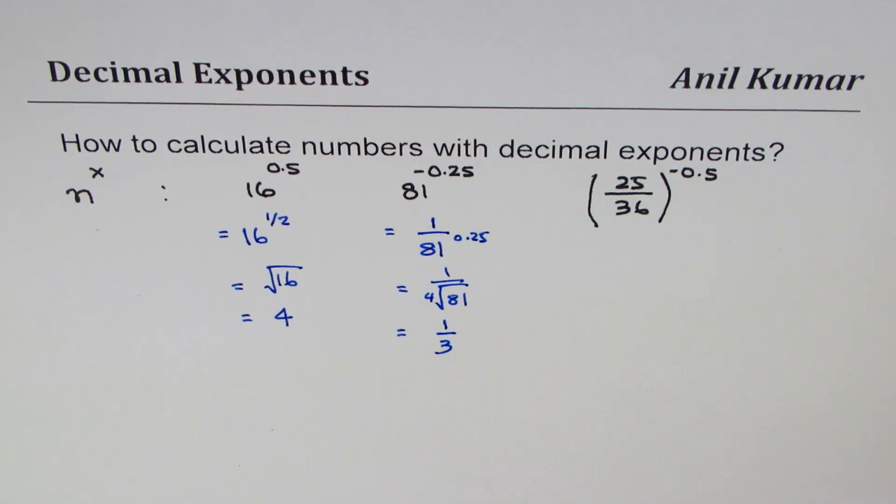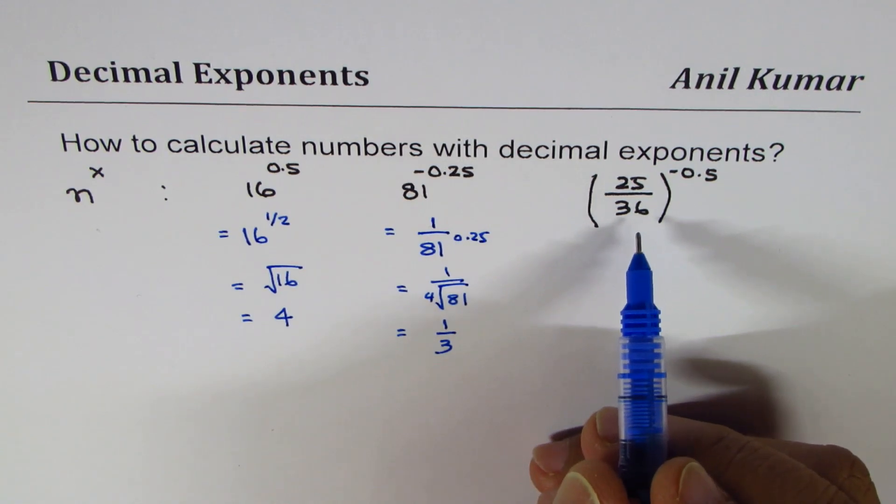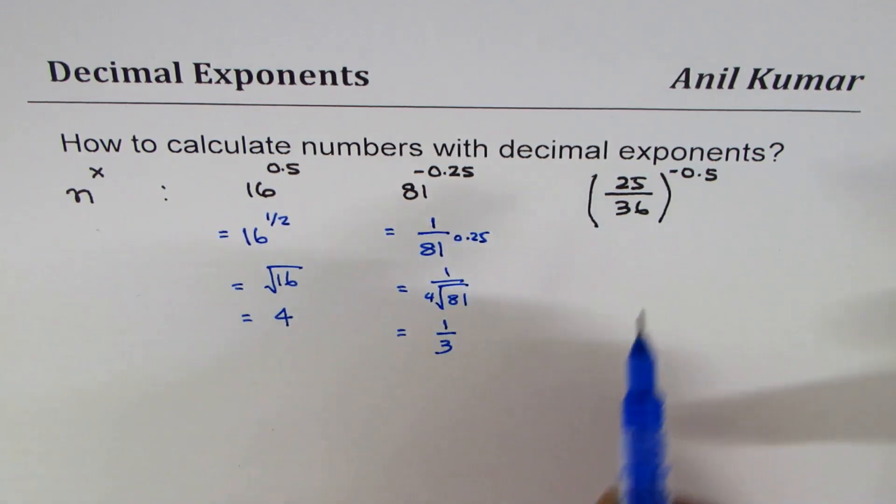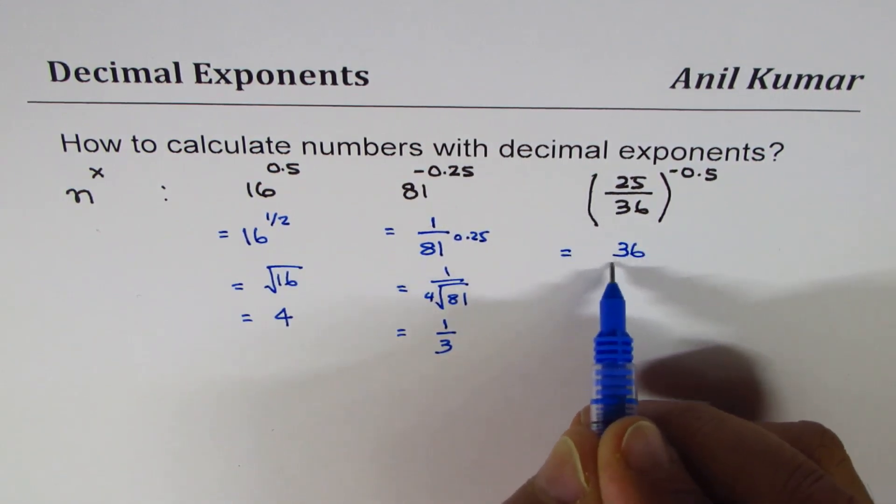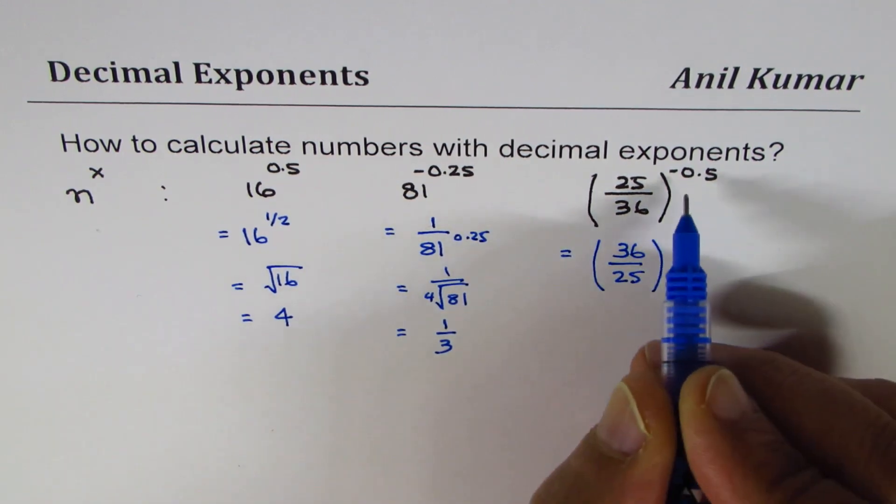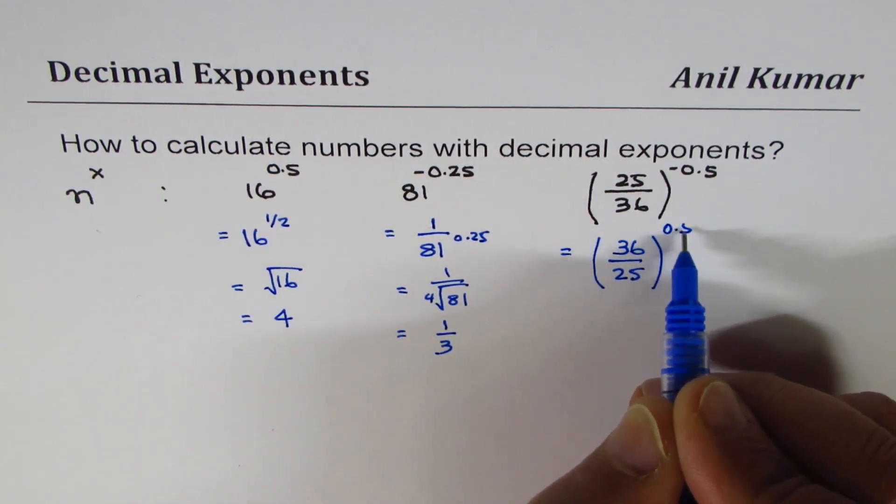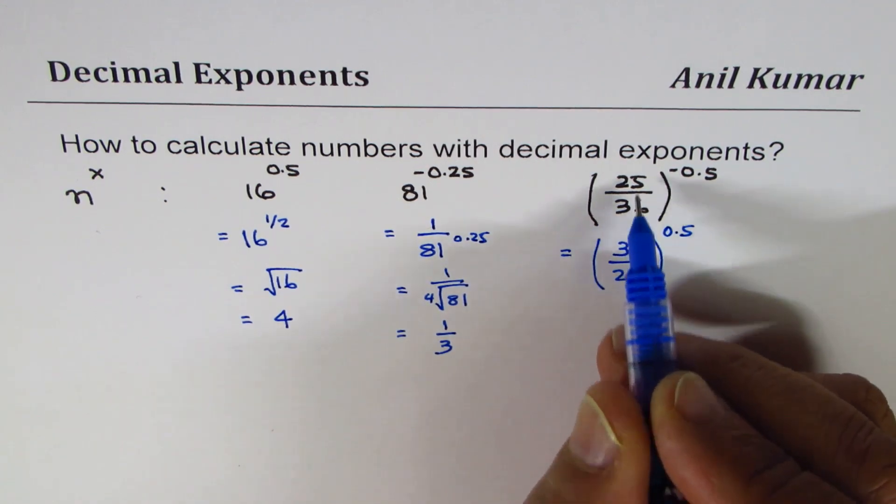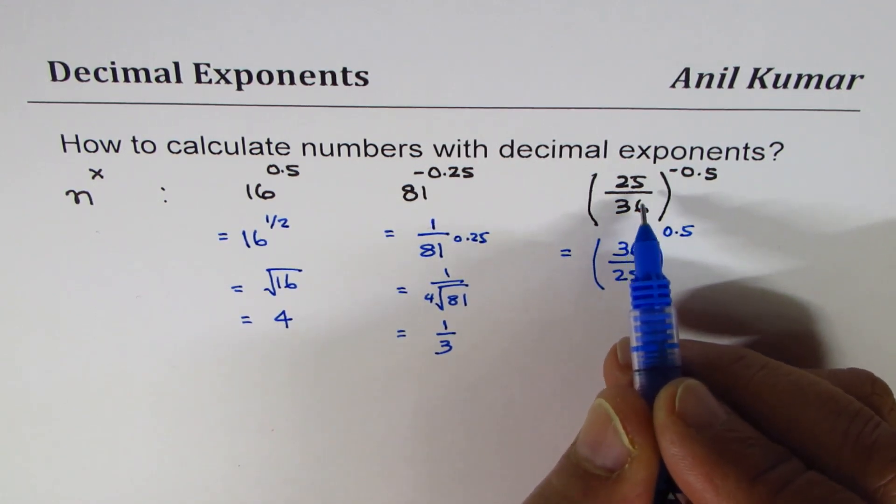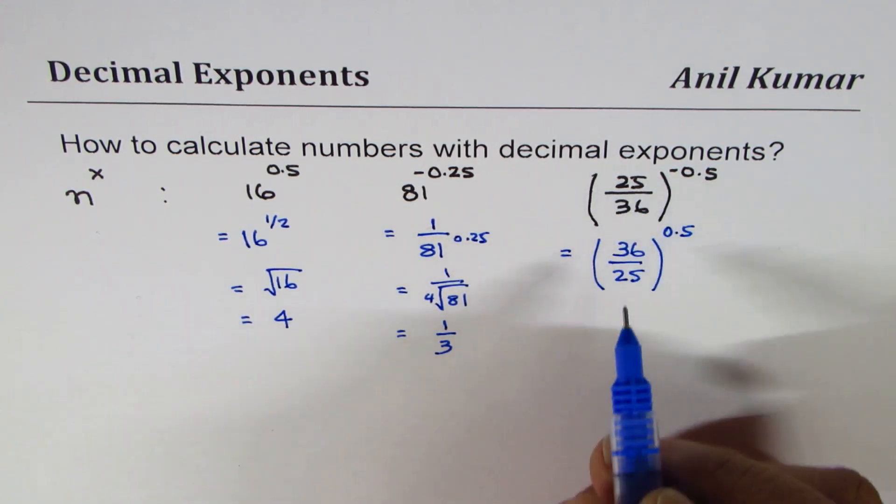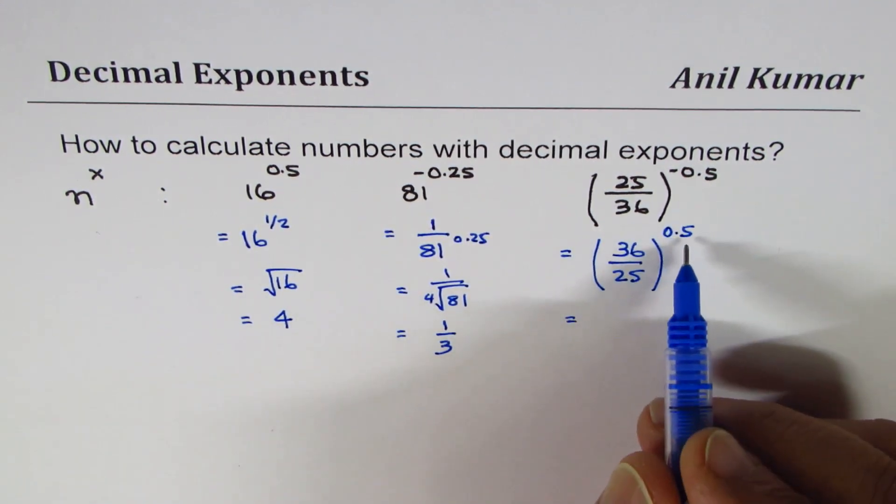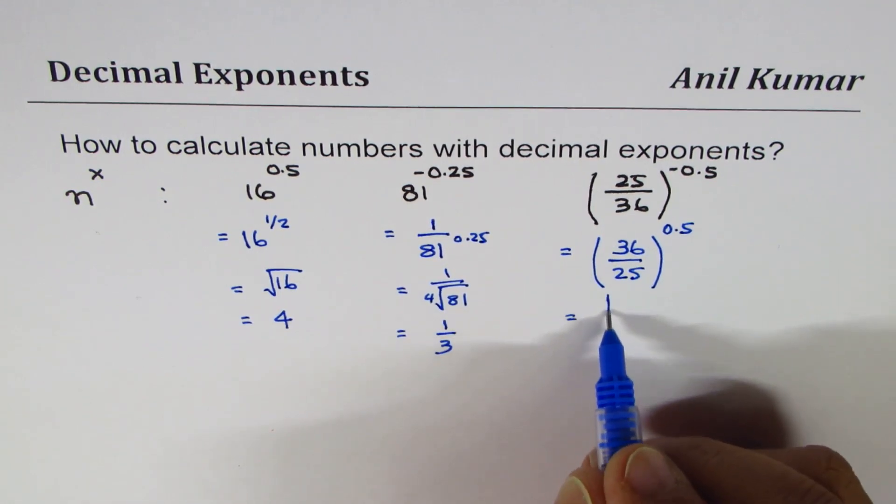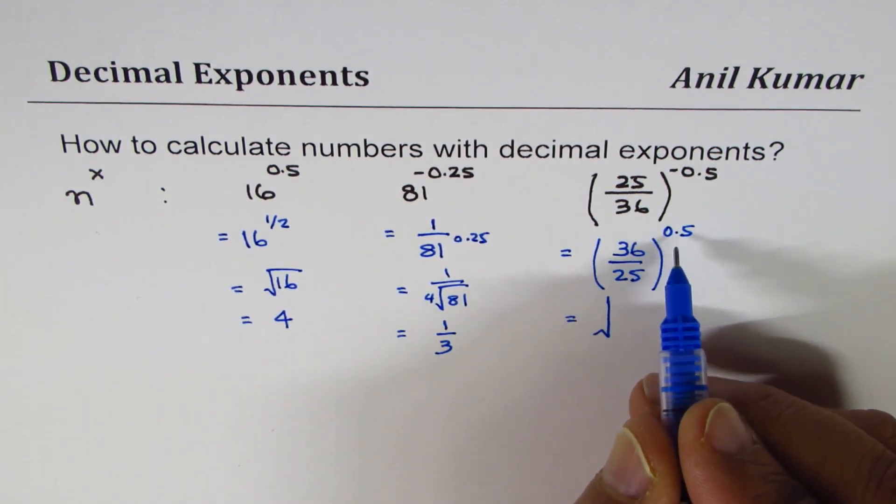In this example, negative as we discussed is the reciprocal, so here it flips and becomes 36 over 25, and the exponent becomes 0.5. That minus makes reciprocal of the fraction: 25 over 36 becomes 36 over 25.